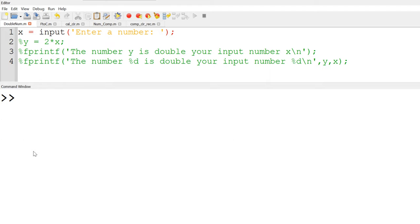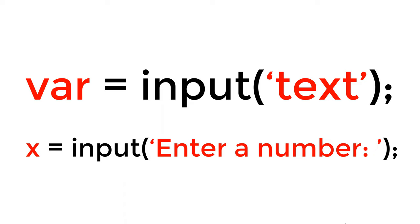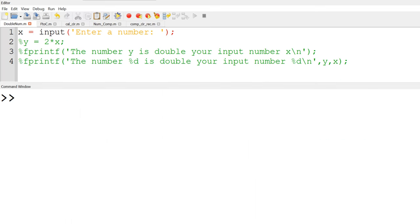To write such a program, we need to write a script to receive a number from the user. To receive the number, we will use a built-in function 'input'. The input function displays a text in the command window of your own choice and asks for input from the user. You can provide either numbers or text, which will be saved in a variable. In this example, you can display 'enter a number' and save it in the variable x, using: x = input('enter a number'). The number received from the user will be saved in variable x.